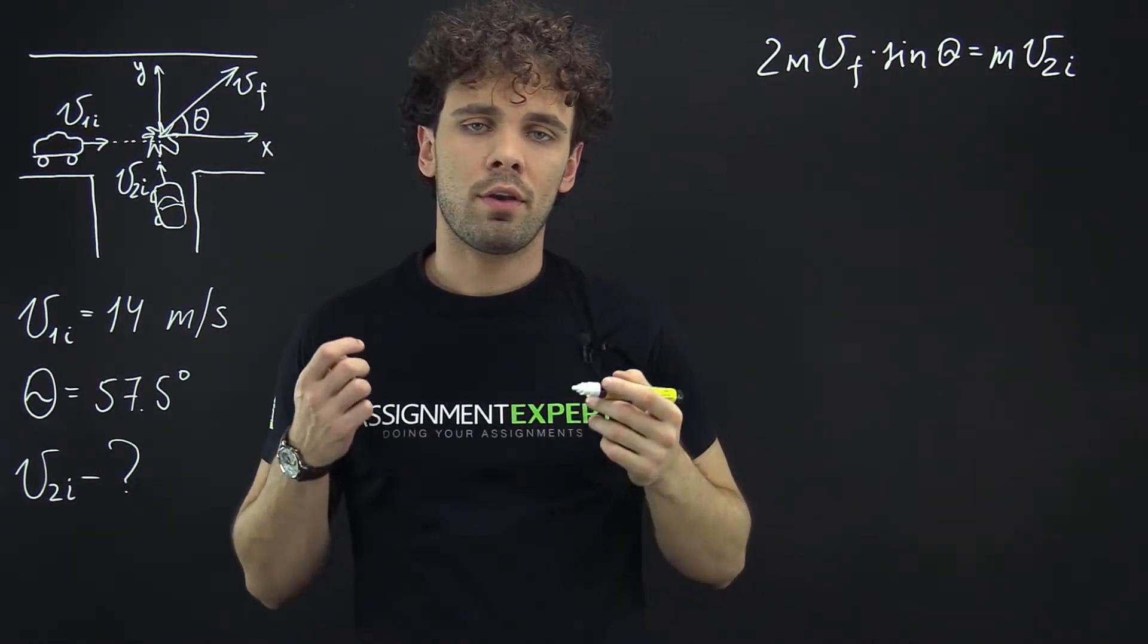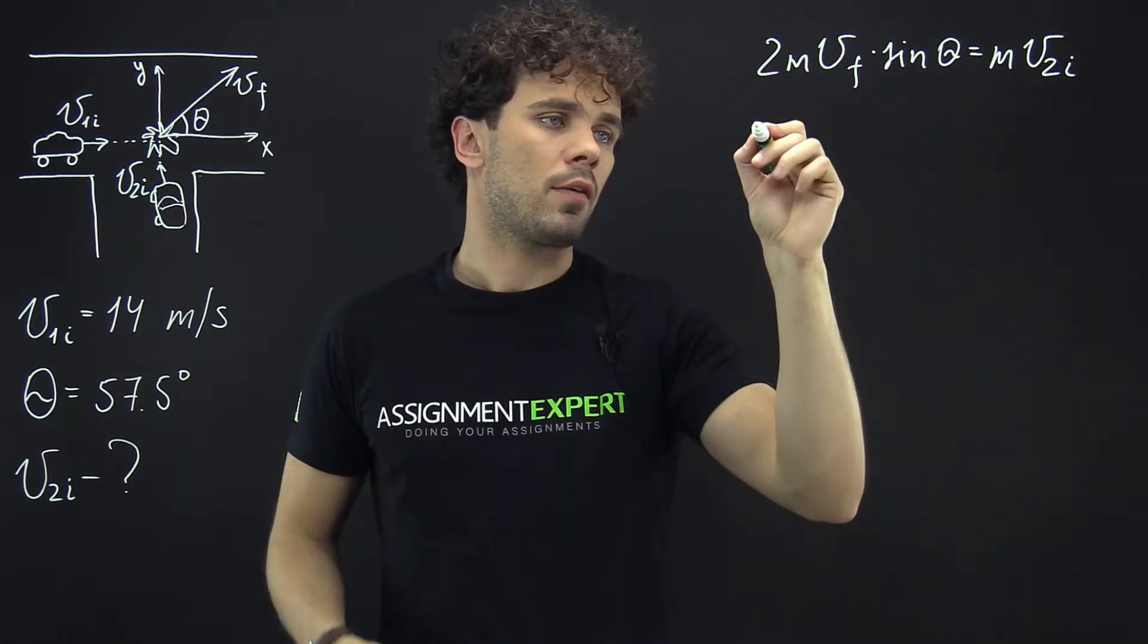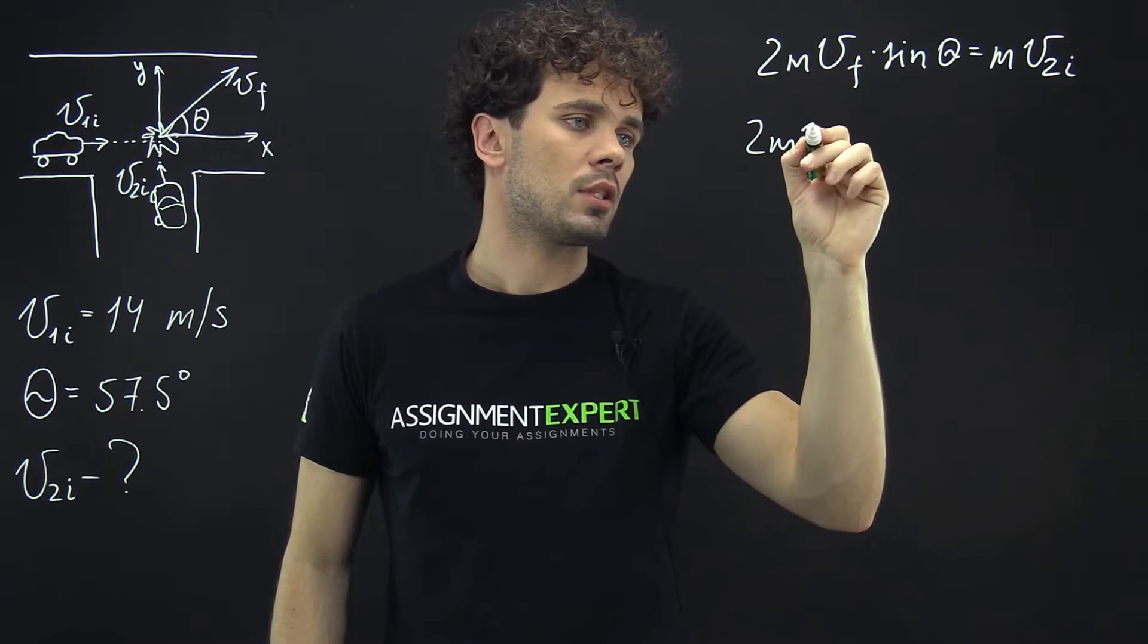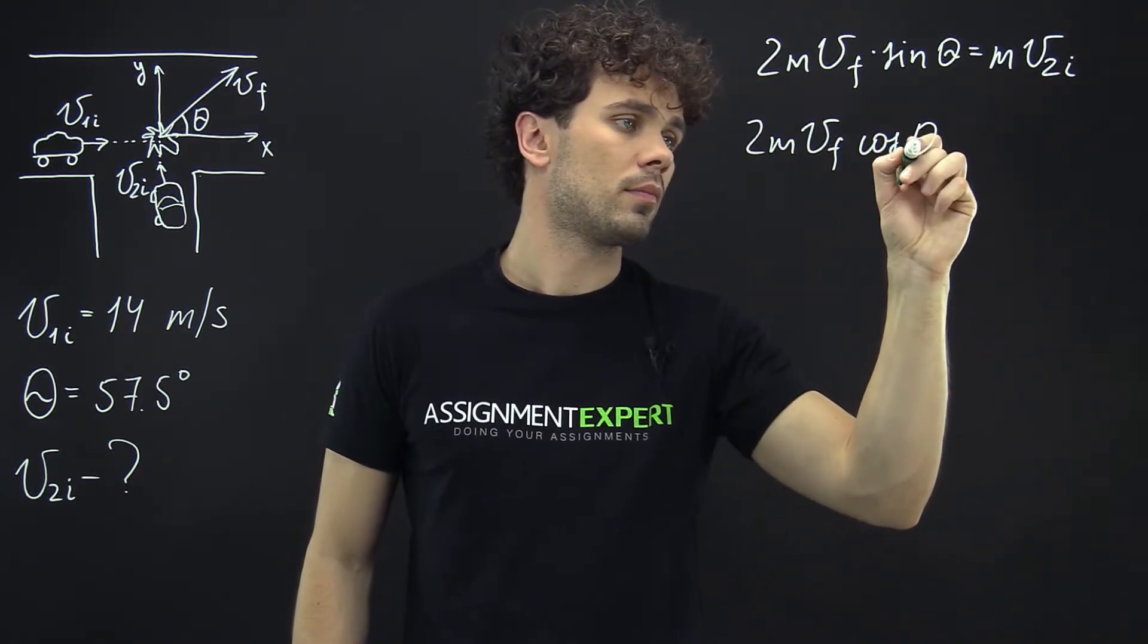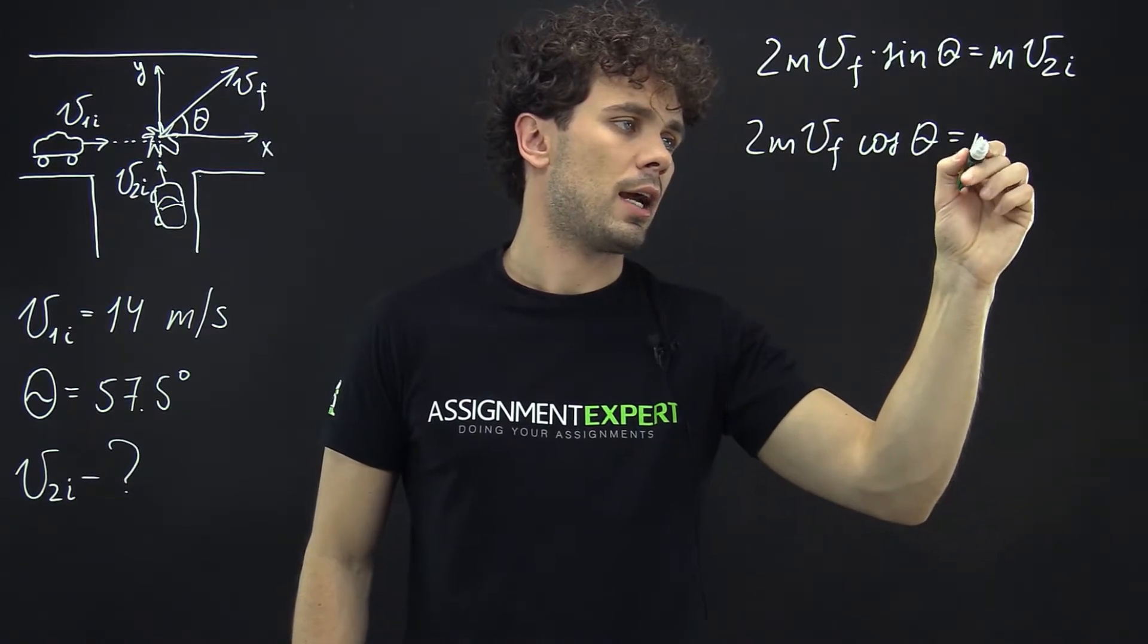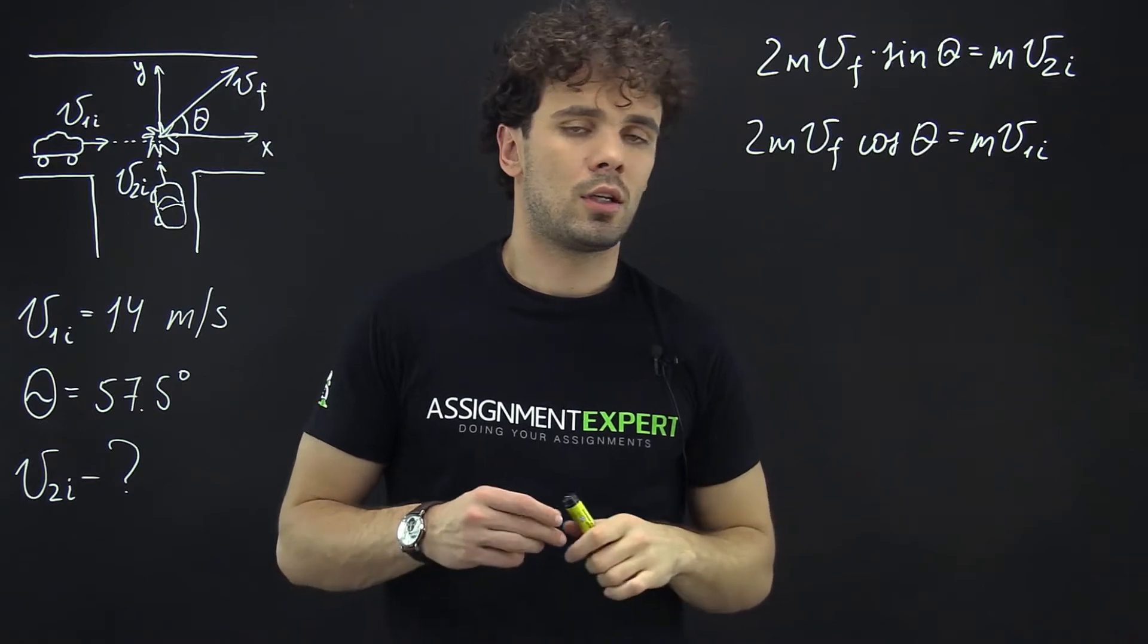And now for the horizontal motion or the motion to the east we have 2 times m times final speed times cosine theta equals m times V1i.